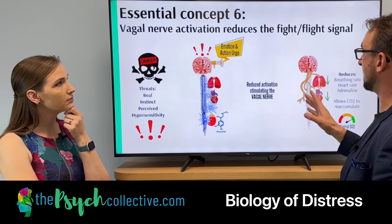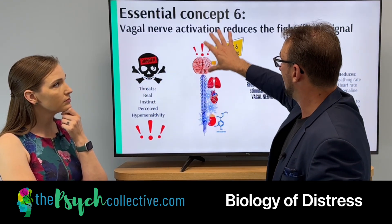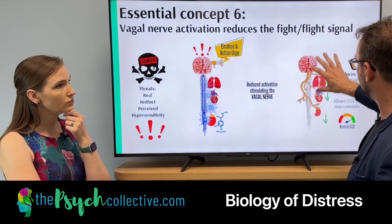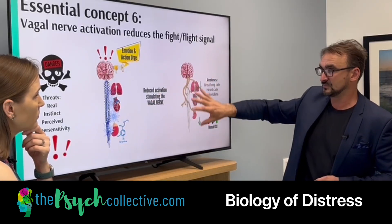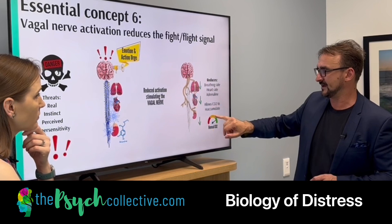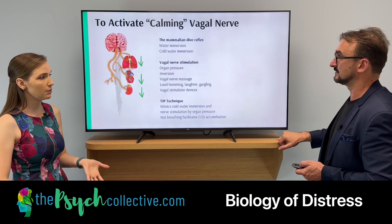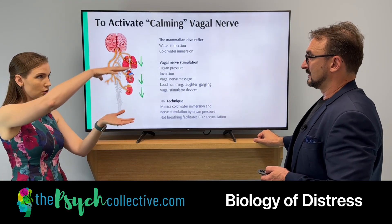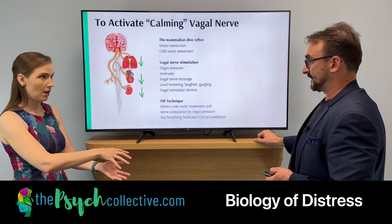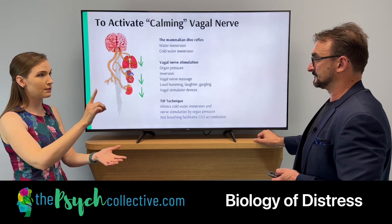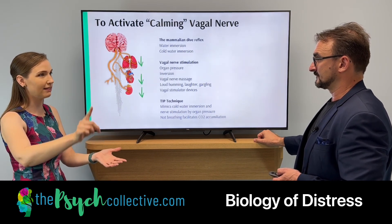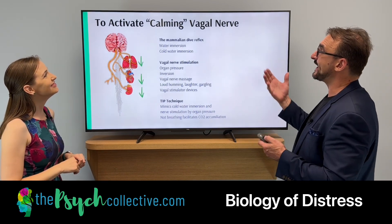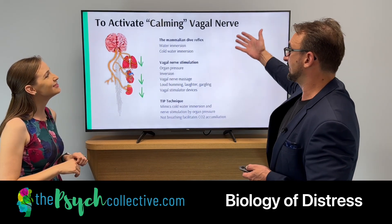So here's the threat — we're really activated — we reduce our activation by activating the vagal nerve, and it normalizes us. The sympathetic nervous system brings everything up; the parasympathetic nervous system brings it all back down again. A way to remember it: parasympathetic — paramedic — they come to help.